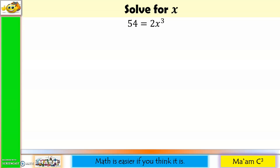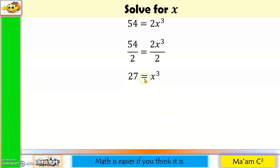Now what if we have this? Solve for x: 54 is equal to 2x cubed. First rule in math — if you can simplify the given, simplify it first. Divide both sides by 2: 54 divided by 2 is 27, and the 2s cancel out. So I have 27 equals x cubed. I need an exponential expression with exponent 3. And 27 is 3 cubed. So 3 cubed is equal to x cubed. Since our exponents are equal, it follows that our bases are equal too. So x is equal to 3.